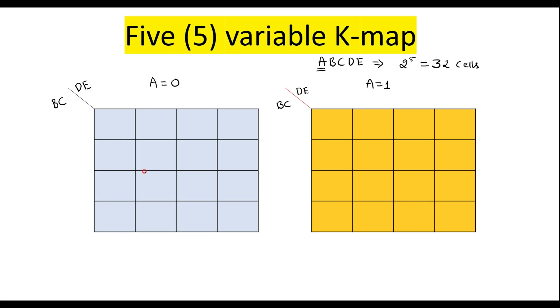Now I will tell you how to put the numbers. As we know, the column headers follow the Gray code order: 00, 01, 10, 11. This is the normal 4-variable Kmap layout.